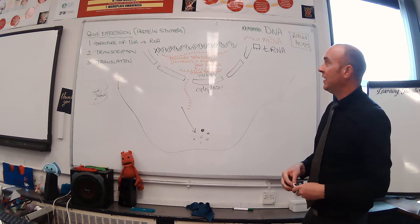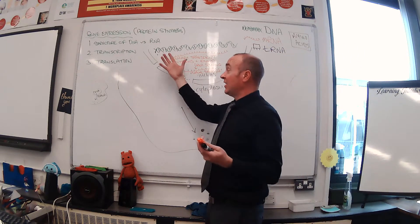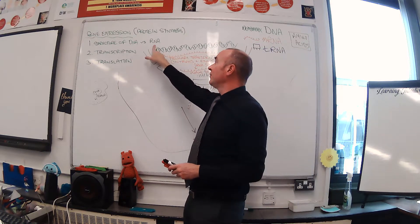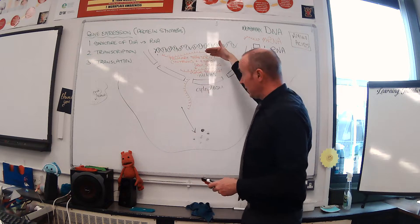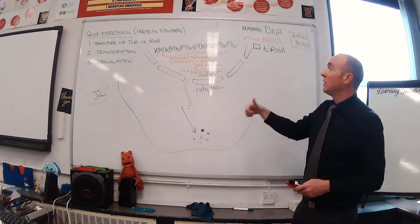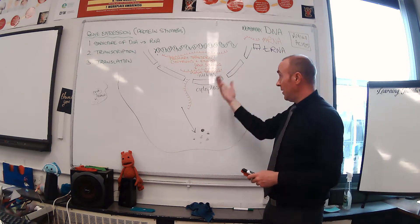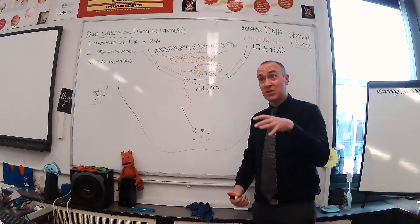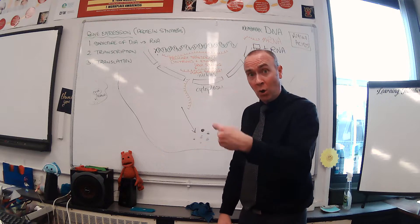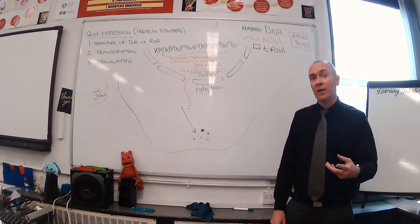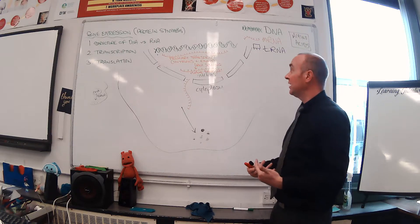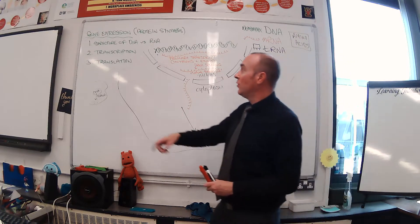We've looked at the process of transcription with the help of RNA polymerase, the formation of a primary transcript, RNA splicing to the mature transcript. We're now going to move on to the process of translation.